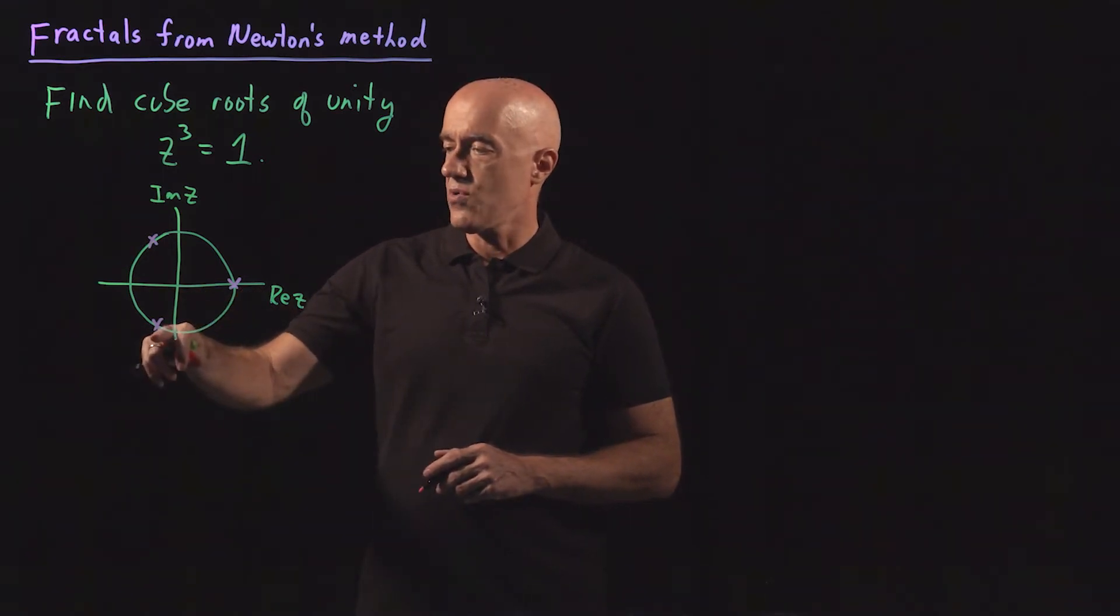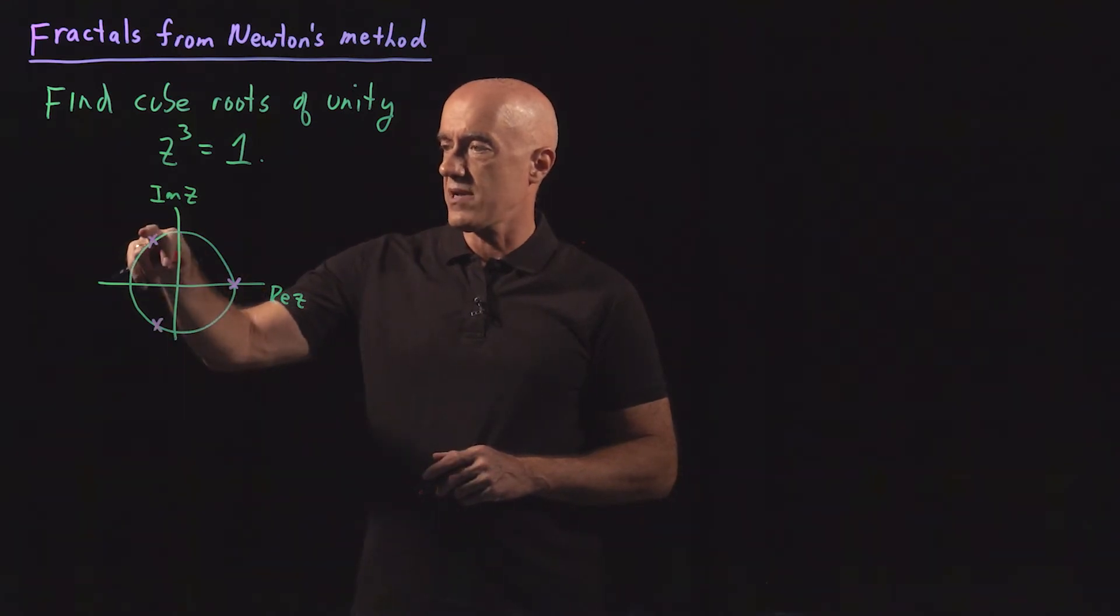If you multiply this lower complex number by itself, you spin around to this upper complex number, and then you multiply it by itself again, and you get 1.